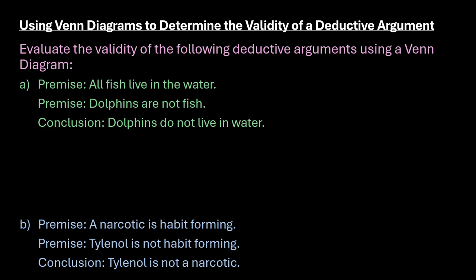Hi, for this video what I want to do is use Venn diagrams to determine the validity of a deductive argument. Basically with the Venn diagrams, you're going to create a box that represents the set of all things, and then draw circles and X's to represent the premises. You're basically looking to see if the conclusion follows logically from the premises that are given, from the known information.